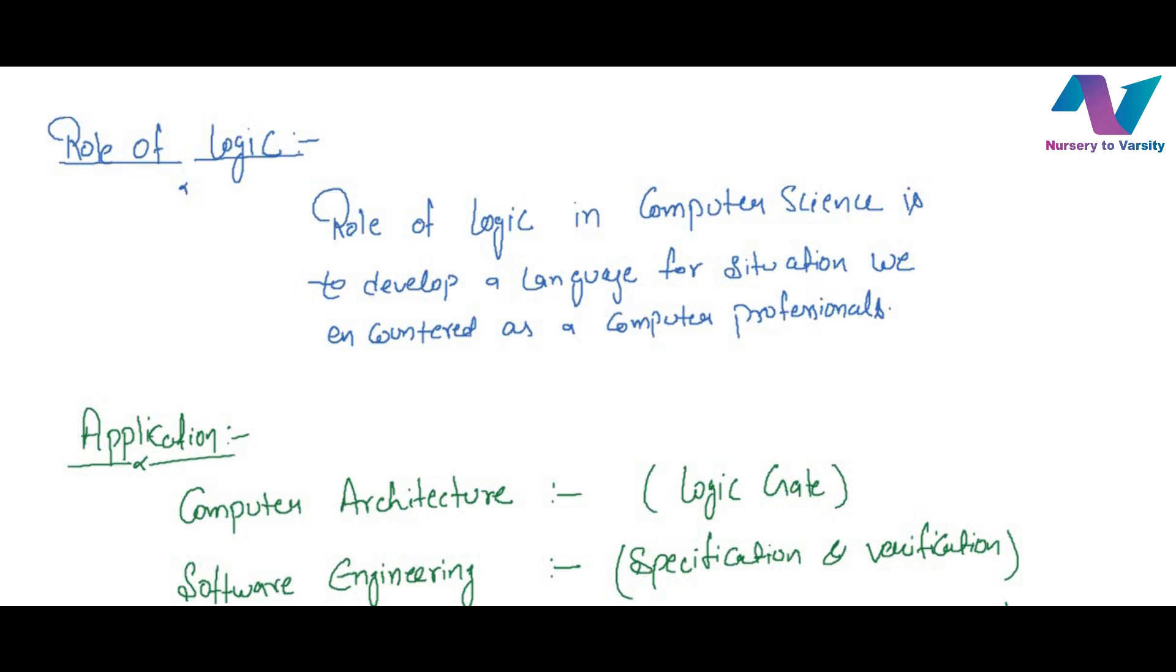And formal language consists of mainly two types. One is propositional logic and second one is predicate logic. We will discuss propositional logic and predicate logic in our next lectures. And we can say if we talk about any applications of logic.